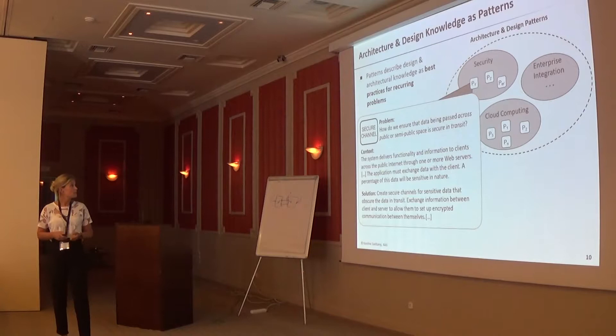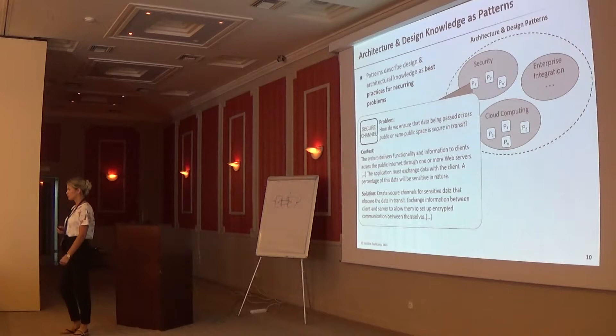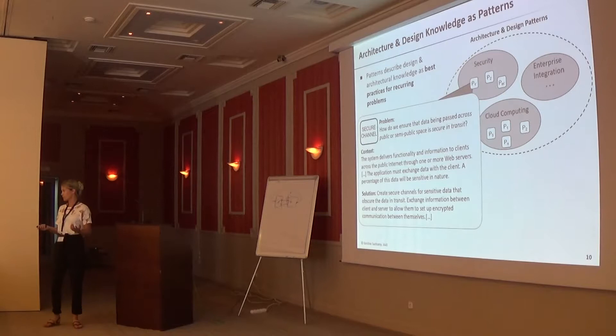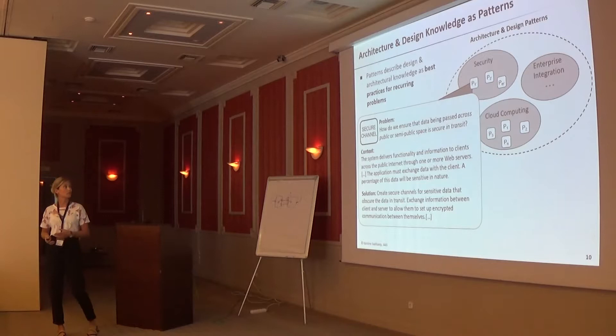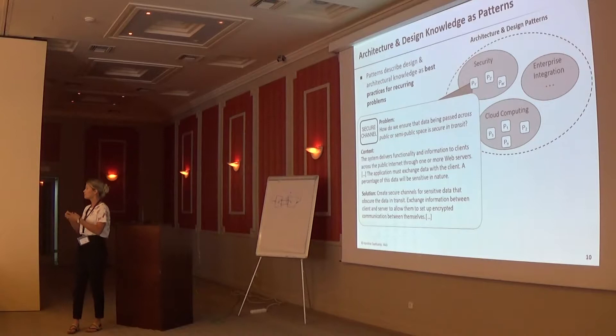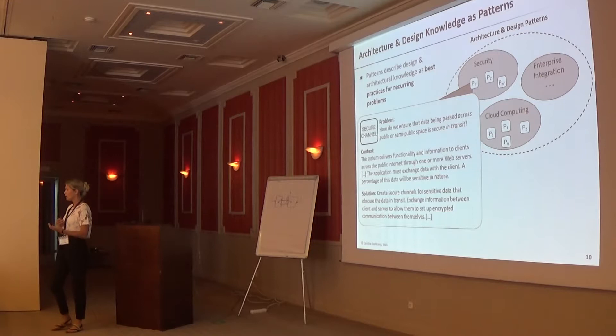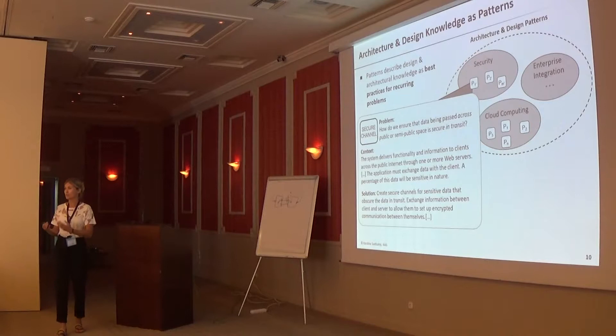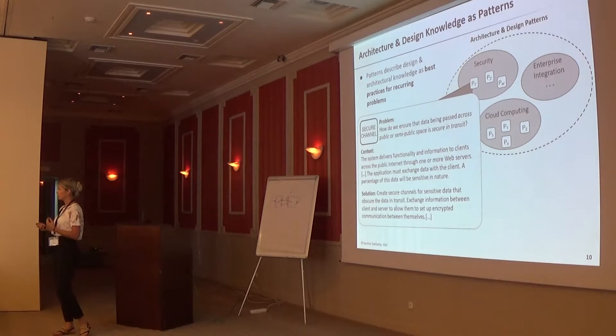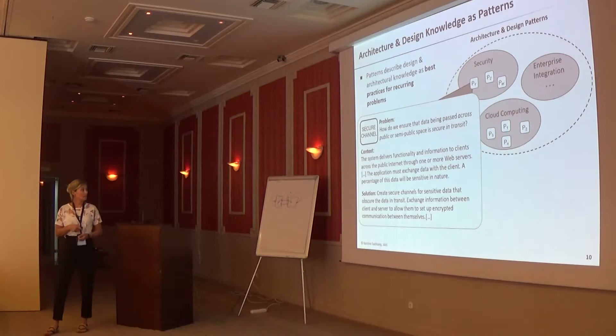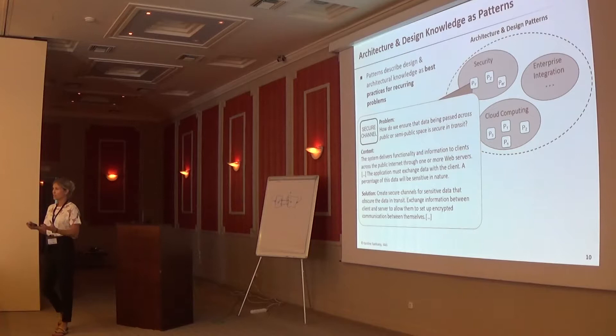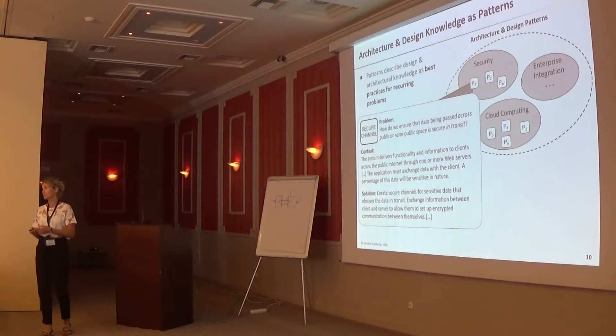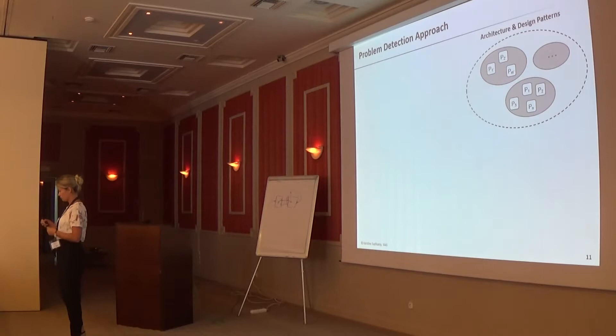One example is the secure channel pattern which is part of the security patterns. All patterns describe the problem with a textual description. The problem here is: how do we ensure the data being passed across public or semi-public space is secure in transit? Then we have a context description which gives more information about when this problem can occur. There's a system delivering functionalities, some clients use the functionality, they exchange data over public network, and these data are sensitive. Then they give a solution independent of specific technology - a more generic description. The solution: create a secure channel for the sensitive data to enable encrypted communication between components. There are several other sections for describing patterns, but this is the most interesting part for our approach.